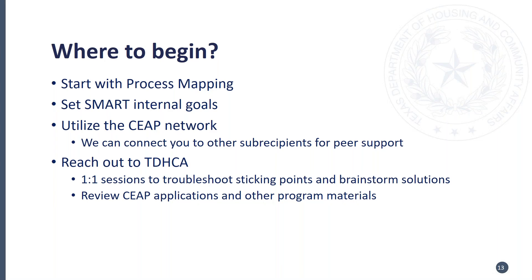We also suggest utilizing the CIAP network. You have TACA and us with the ability to connect you to other sub-recipients for peer support. If there's an area where you know there's room for improvement, you are always welcome to reach out to me and I can connect you with another agency that might already be doing that well, or another agency that's also struggling with the same thing and needs to talk through processes. Please lean on your peers because they're doing the same job as you and they understand it better than anyone else. Reaching out to TDHCA really should be a last resort — once you've already utilized all the resources that have been provided. We can always do a one-on-one session to troubleshoot things and brainstorm solutions, and if you have any documents or materials you want us to review and provide feedback on, we can do that as well.